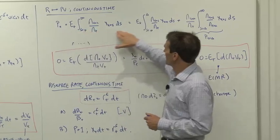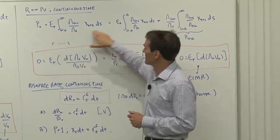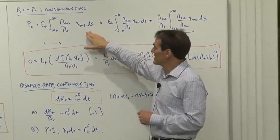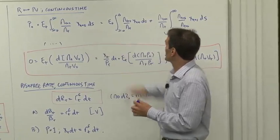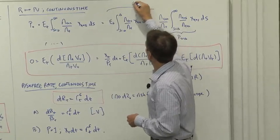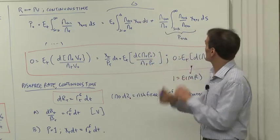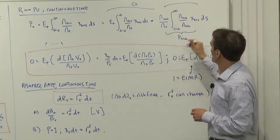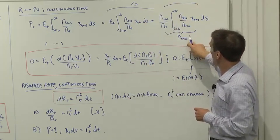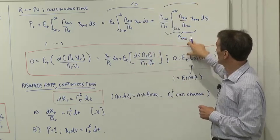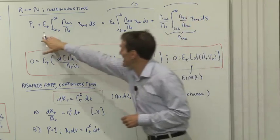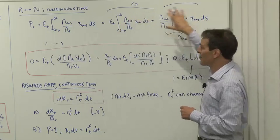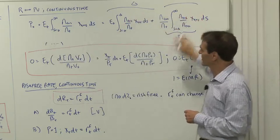You start with the present value relationship, price is expected discounted payoff. Then let's first difference it. Our first step is we break it up into what happens in the first delta instant, and then what happens from delta to infinity. You recognize that as tomorrow's price, right? The delta to infinity, that's just the price tomorrow. So we have price today, we have a little bit of a dividend payment, and we have a price tomorrow.